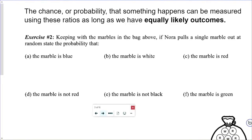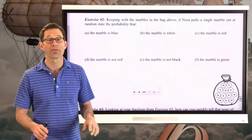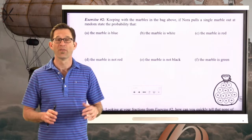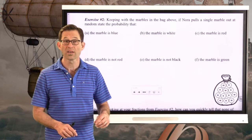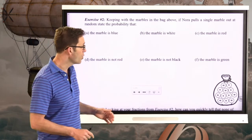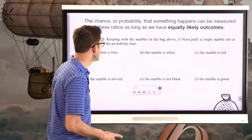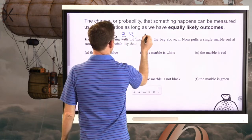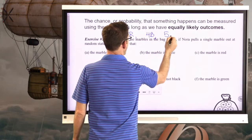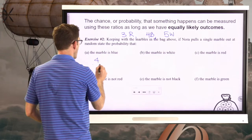Exercise number 2. Keeping with the marbles in the bag above, if Nora pulls out a single marble at random, state the probability that — blank. The probability that the marble is blue is simply 4 twelfths. We had 3 red, 4 blue, 5 white, so the probability that the marble is blue is 4 twelfths. You could also write that as one-third — that's fine.